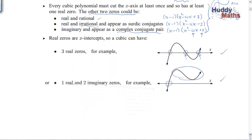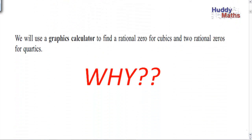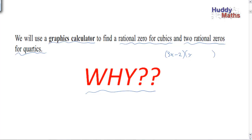We'll use a graphics calculator to find a rational zero for cubics, and two rational zeros for quartics. Why? A rational zero means something like two-thirds, so 3x - 2 would give you two-thirds. If you could find that rational zero on the calculator, then you could make up your quadratic factor using the undetermined coefficient method. Remember, we did this before with the undetermined coefficient. If the cubic was 3x³ with 2 on the end, we can work out these coefficients.